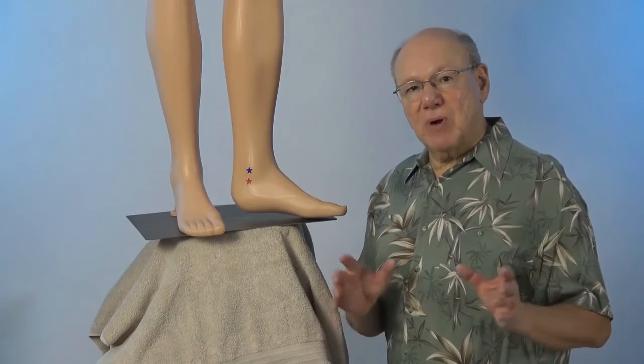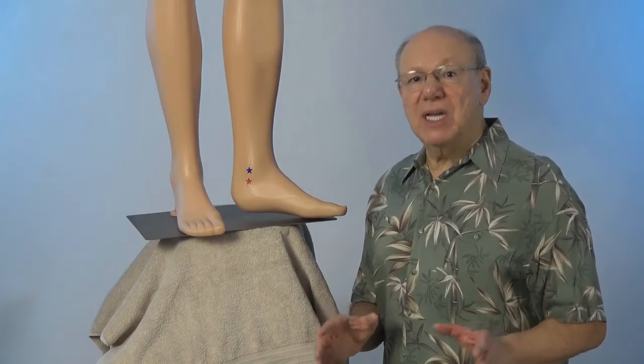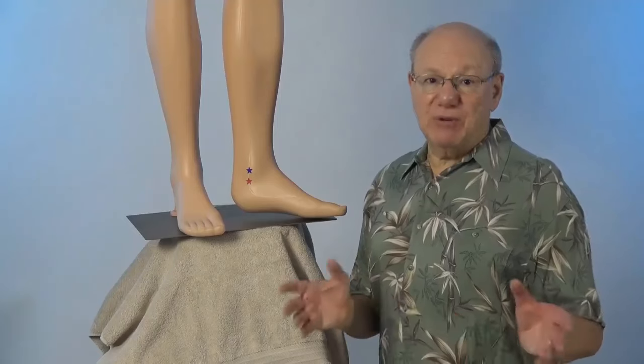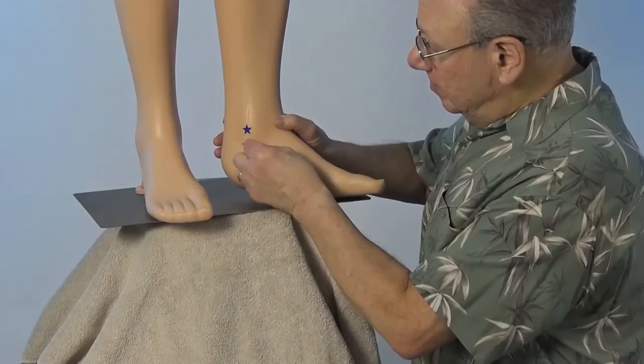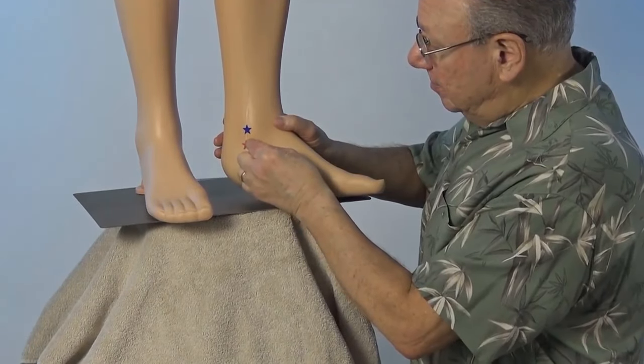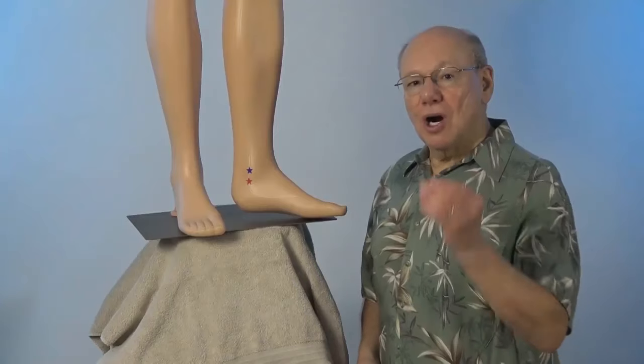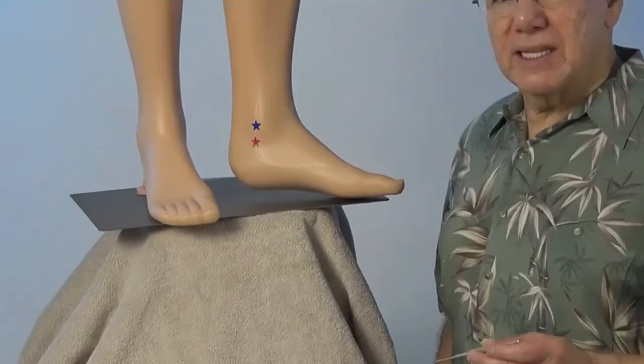Activate Kidney 6 by rubbing this area quickly five times, take a break for a count of five, and repeat four more times. It might look like this. Or if you have a Tei Shin, it might look like this.